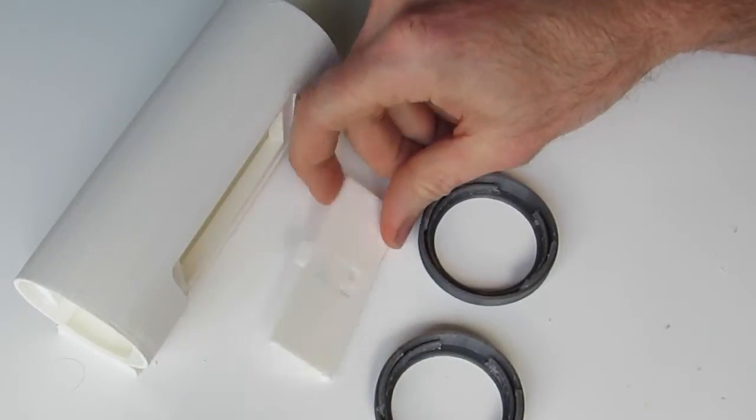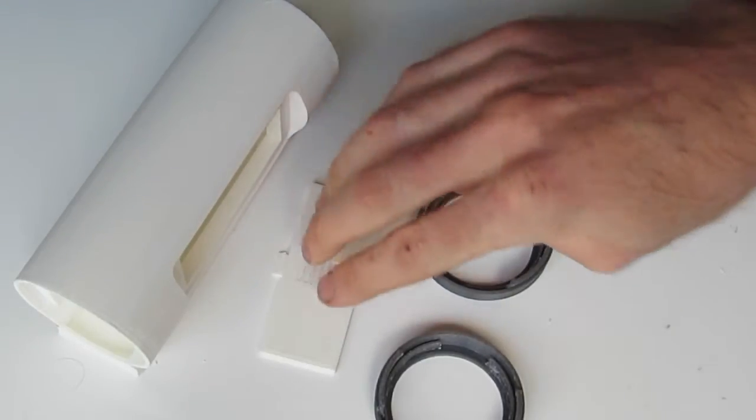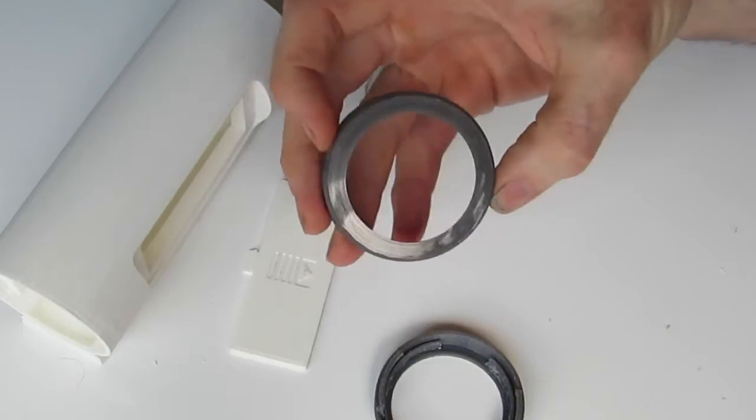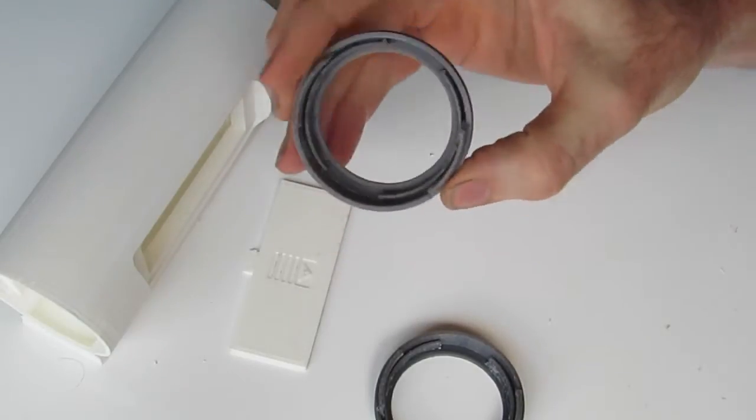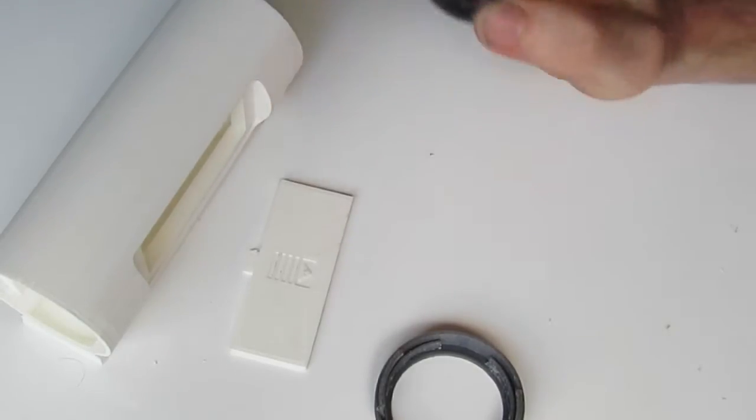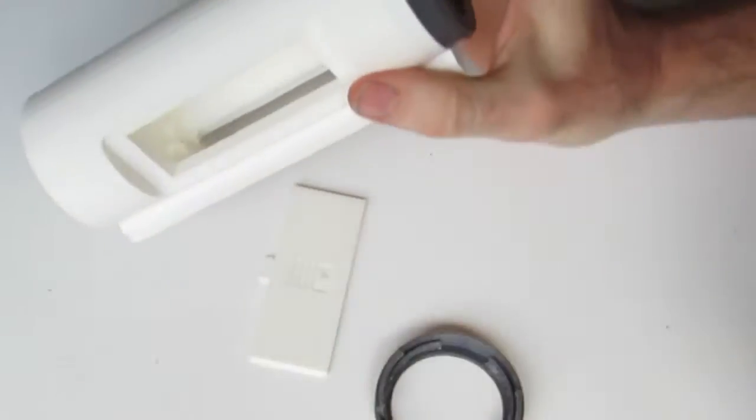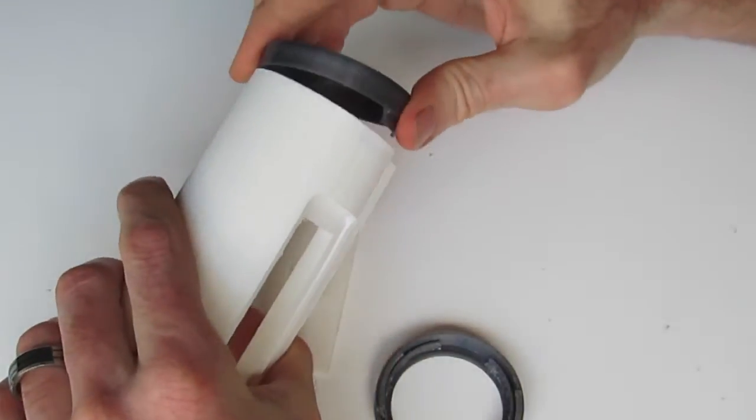Secondly, we've just got our little battery cover here. Again, straightforward print, printed face down as so. And lastly, we've got these little speaker ends here which our speakers clip into and then these clip into the end on each side like so once you've got your speaker in there first.